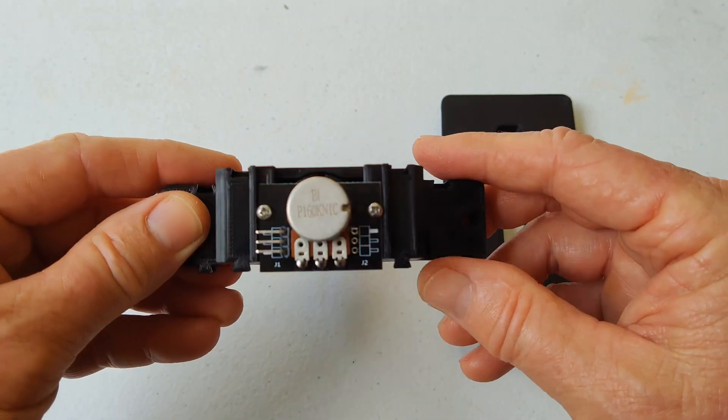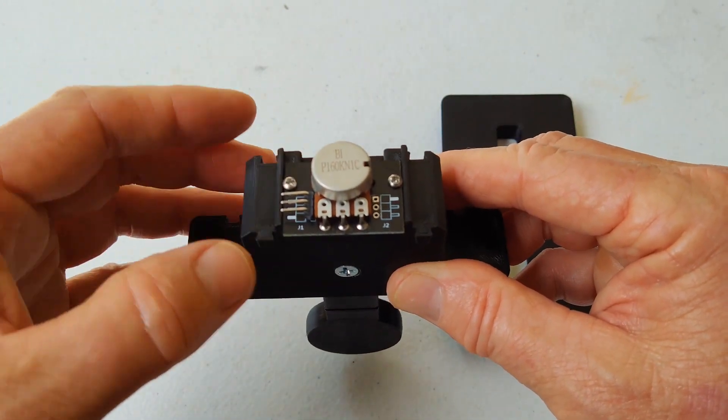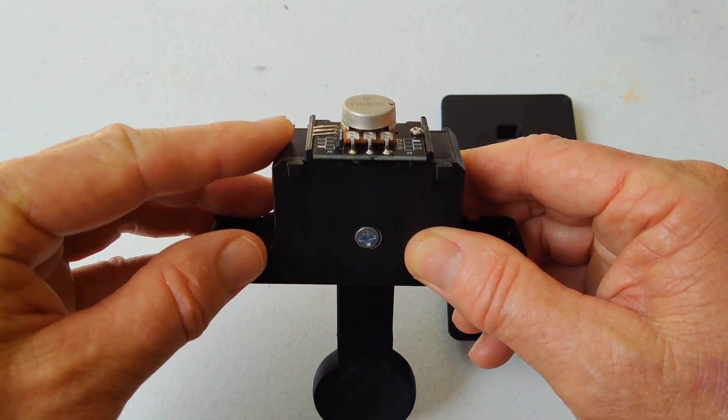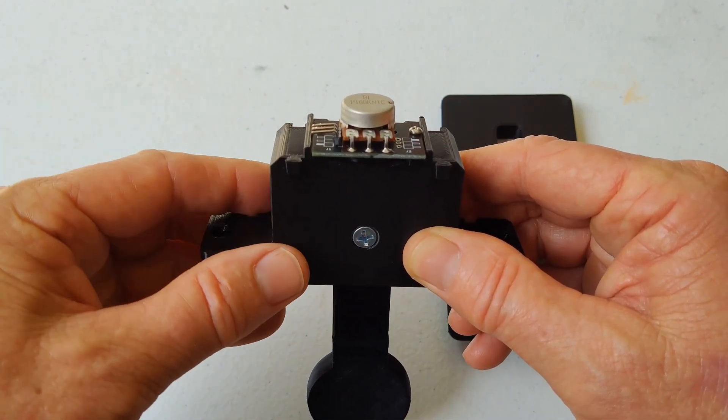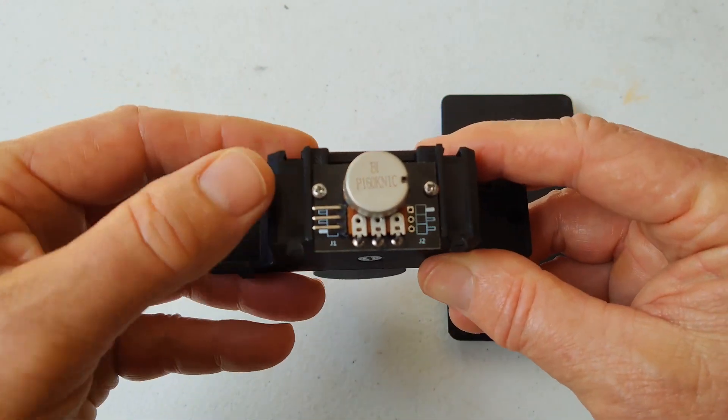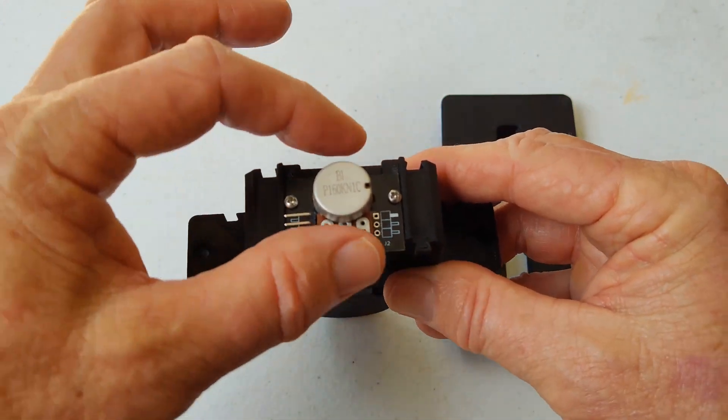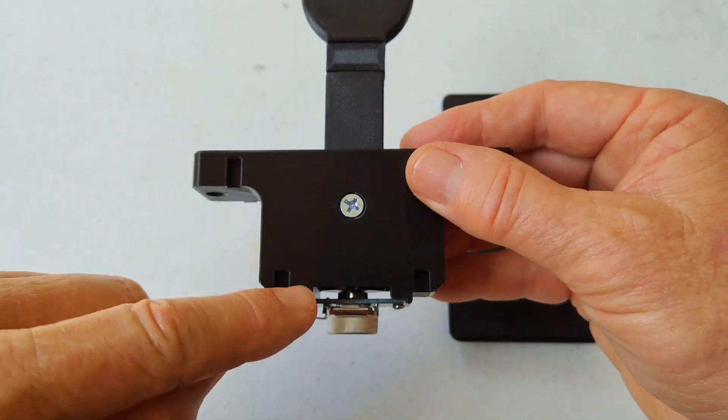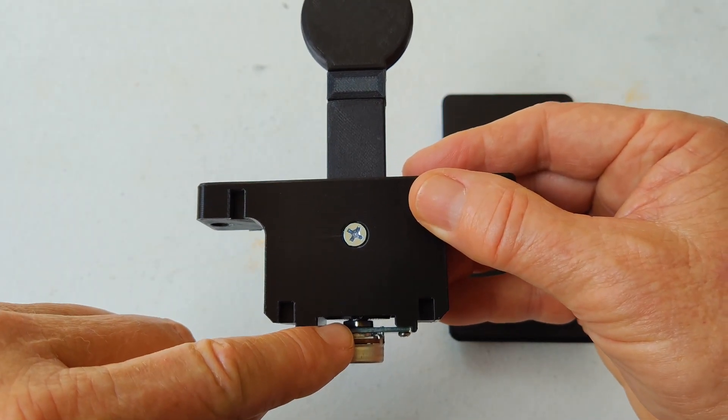Then on the bottom is where you have your 50k pot and it's mounted to this circuit board here so you can have a three prong connector if that's what you want to do. And then these two screws here, you just remove them and this whole section pops out with the gear that's attached here to the pot.